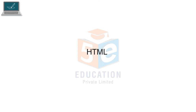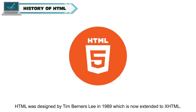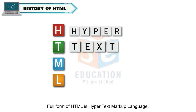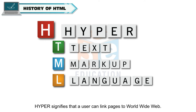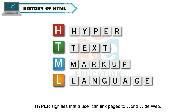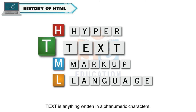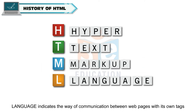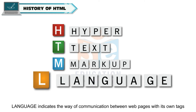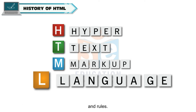History of HTML: HTML was designed by Tim Berners-Lee in 1989, which is now extended to XHTML. The full form of HTML is Hypertext Markup Language. Here, 'Hyper' signifies that a user can link pages to the World Wide Web. 'Text' is anything written in alphanumeric characters. 'Markup' means formatting and highlighting of text with special tags. 'Language' indicates the way of communication between web pages with its own tags and rules.